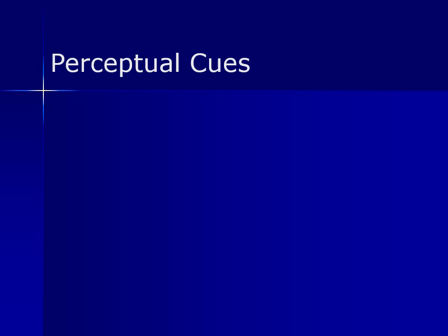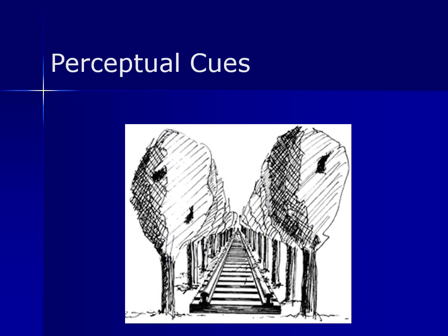Now let's move on to perceptual cues. You've probably seen railroad tracks and how they appear to come together as they recede into the distance. This is an example of a perceptual cue called linear perspective, where vertical parallel lines seem to grow closer as they move further away. We know that the parallel lines do not converge, so this is yet another example of where reality and perception differ.